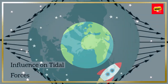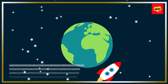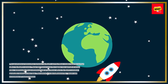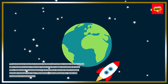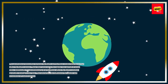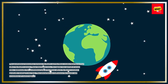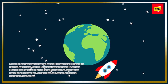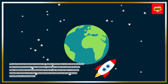The gravitational interaction between the Earth and the moon creates tidal forces that affect the Earth's oceans. These tidal forces cause the regular rise and fall of ocean tides. Additionally, the gravitational pull of the moon affects the Earth's rotation, gradually slowing it over time. This interaction also influences the climate and ecosystems of coastal regions.